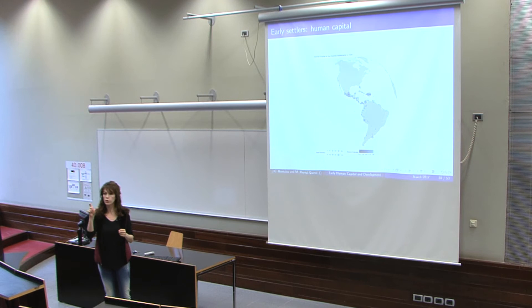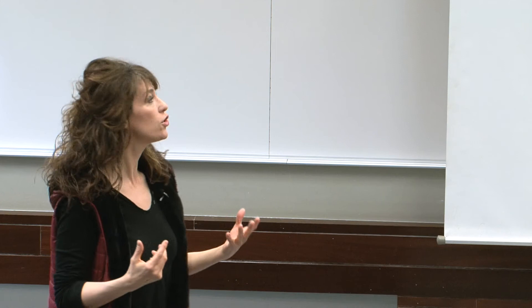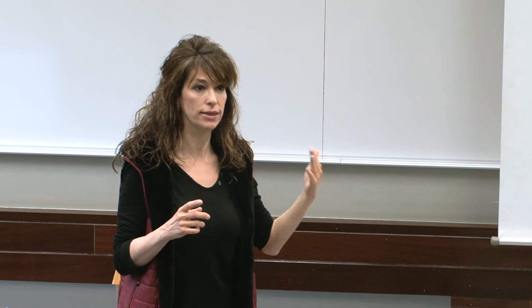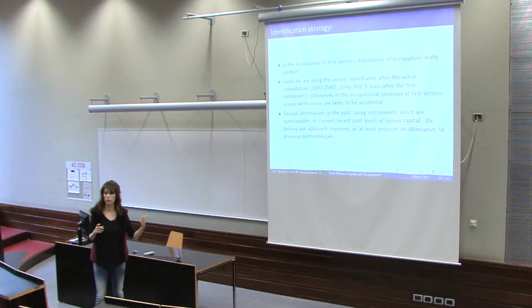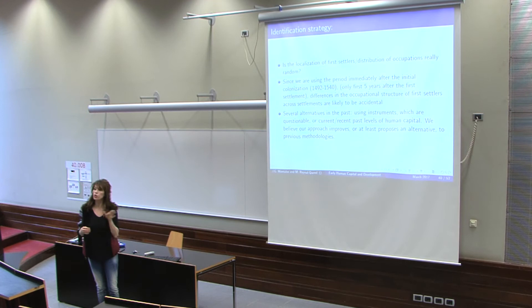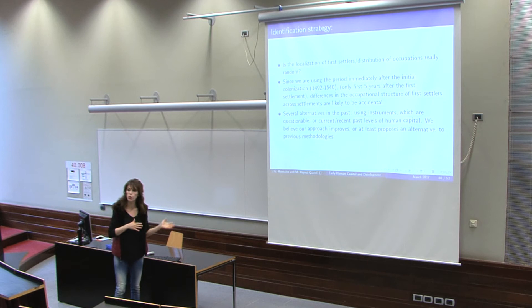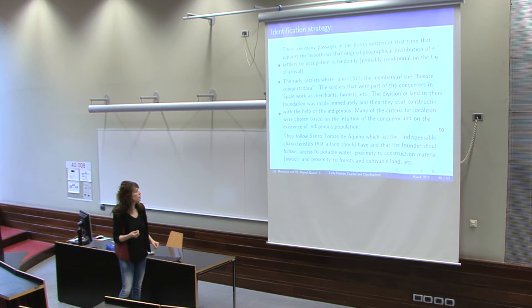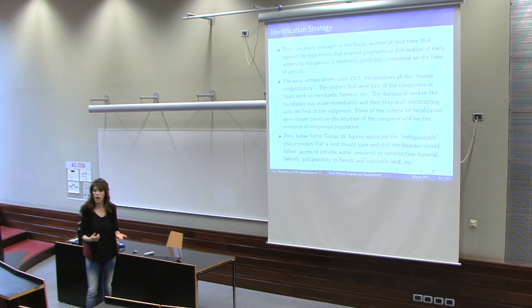An important question is: what is the identification strategy? Is the localization of these first settlers' occupations really random? Since we are using the period immediately after initial colonization, 1492–1540, and only the first five years after the first traveler arrived, the difference in the occupational structure of the first settlers is likely to be accidental. Moreover, in alternative approaches researchers use instruments that are questionable, and also use more recent levels of human capital. We believe this approach at least improves on the methodology previously used in the literature.